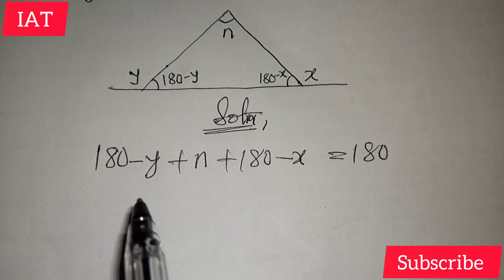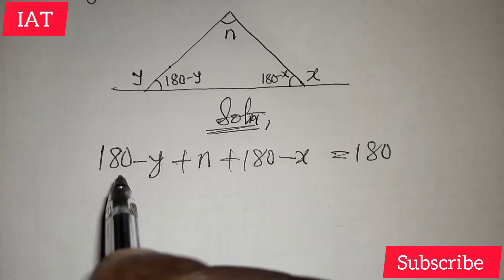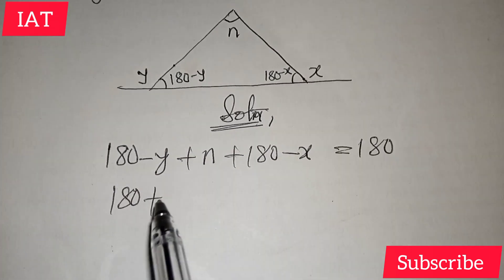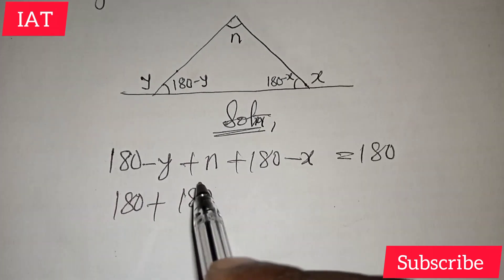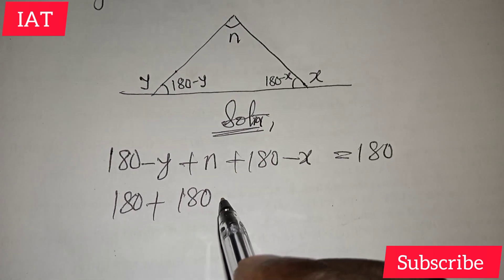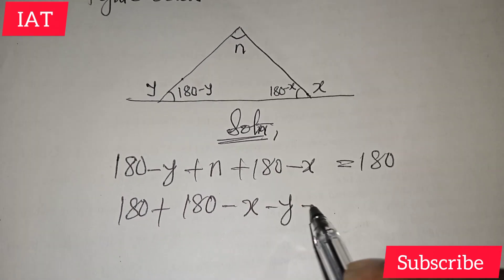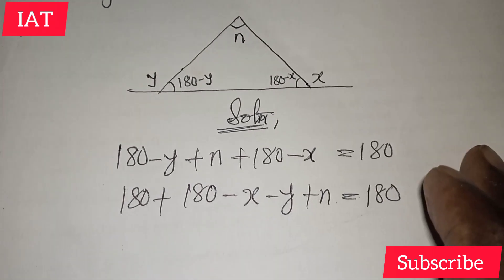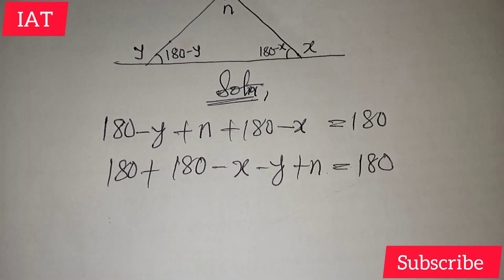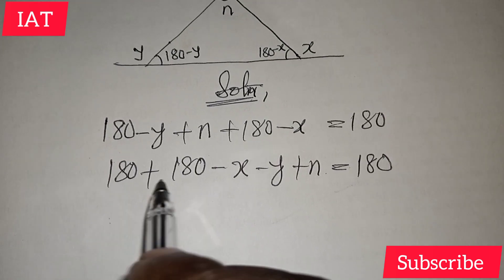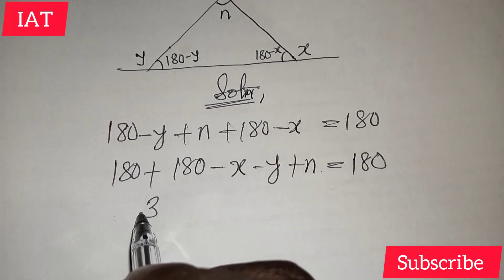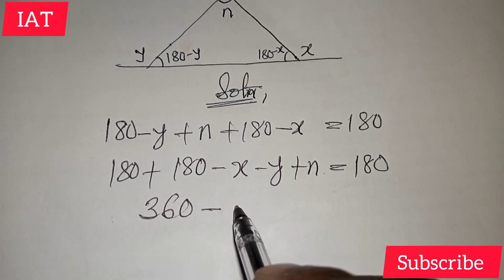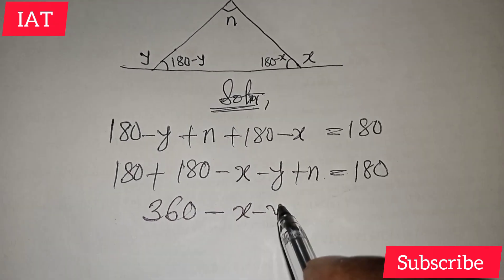Let's make sure everything is in place. We have 180 plus 180, and if we collect like terms, we have minus x minus y plus n equal to 180. So 180 plus 180 gives us 360, and then we minus x and y from it and add up n to give us 180.